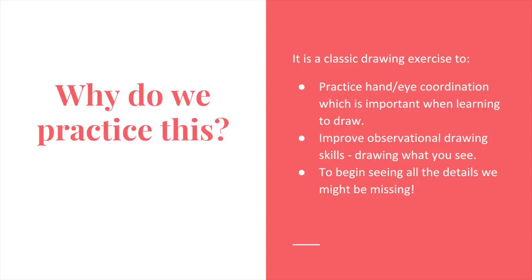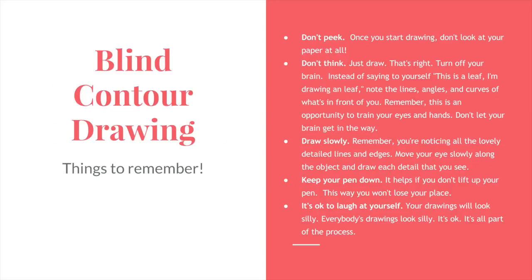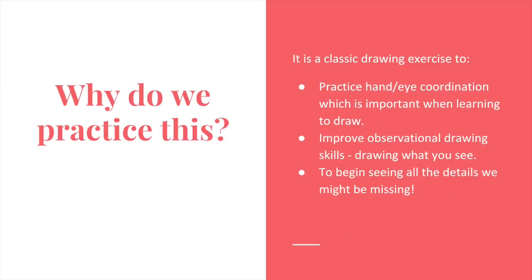So why do we do this? Blind contour line drawing practices hand-eye coordination, which is important when learning to draw. It improves observational skills — observational drawing means drawing what you see. These exercises also help you begin seeing all the details you might be missing. When doing a blind contour line drawing, I like to have my eye guide my pencil, following the edges of my subject and keeping my hand in pace with my eyes. You're going to start your own contour line stations, and I'm excited to see what you guys learn.